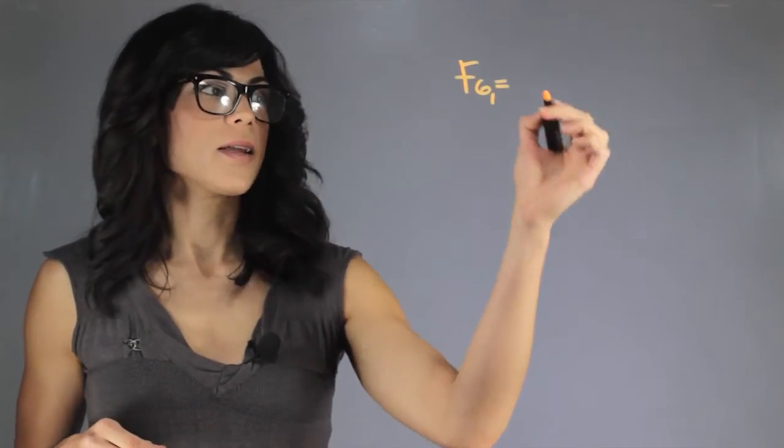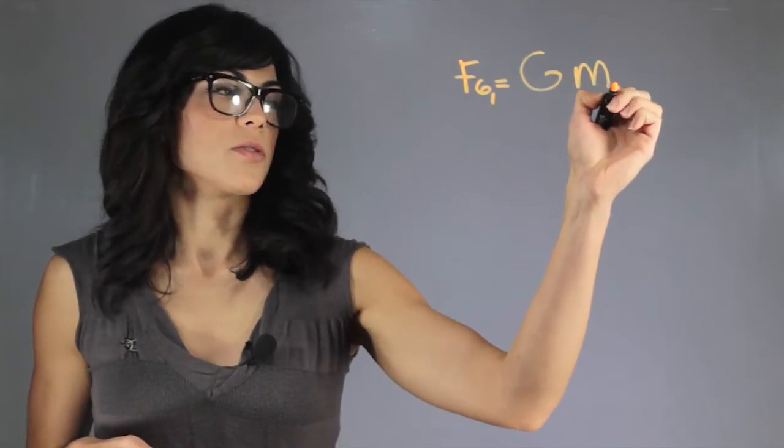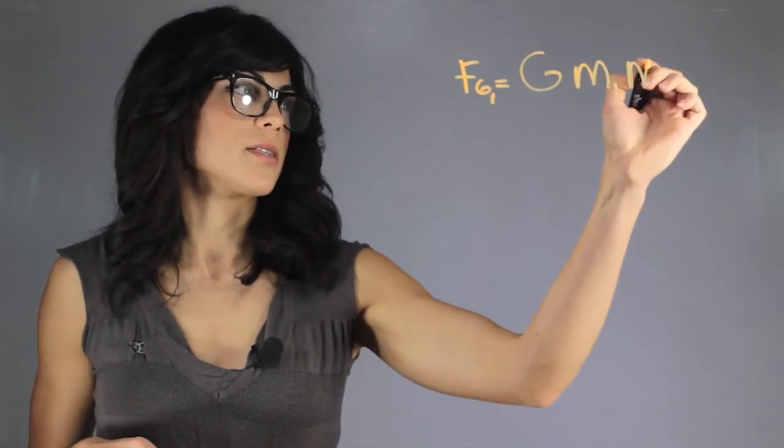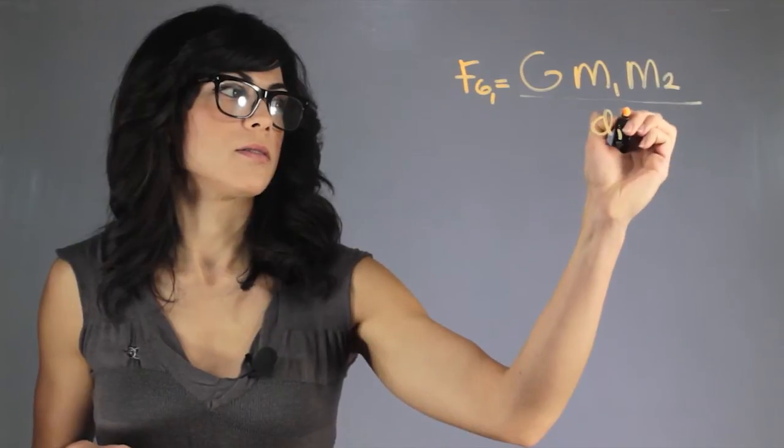So let's say that the first, let's look at the gravitational force first. For the first planet it will be the gravitational constant G, the mass of the first planet, the mass of the second planet, and the distance squared.